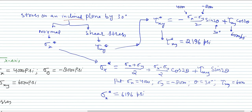So the normal stress on the inclined plane is 6196 psi and the shear stress on this inclined plane is 2196 psi. You will find the notes of this lecture in the description, and if you have any problems please contact me. Thank you.